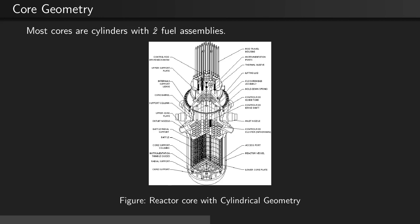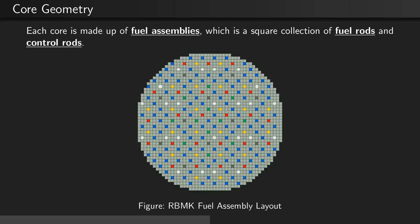Most cores are cylinders with axially aligned fuel assemblies, such as the one seen here. In the standard configuration, each core is made up of fuel assemblies, which are themselves a square collection of fuel rods and control rods. Here is an example core made up of such fuel assemblies.